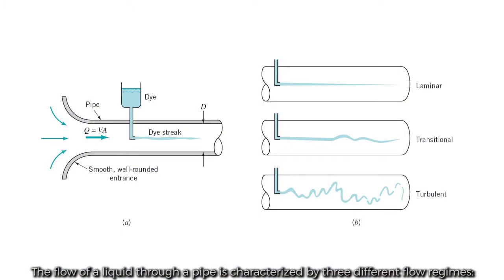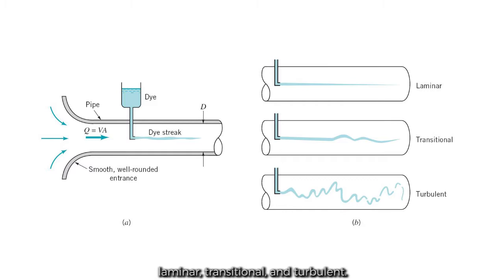The flow of a liquid through a pipe is characterized by three different flow regimes: laminar, transitional, and turbulent.